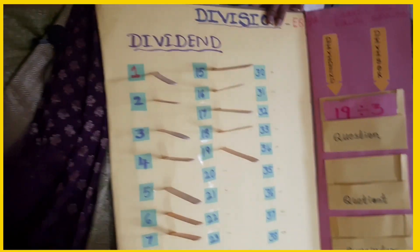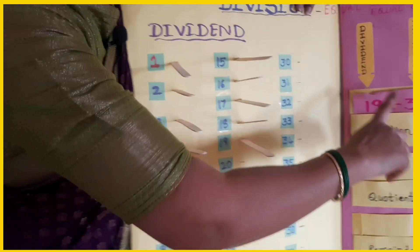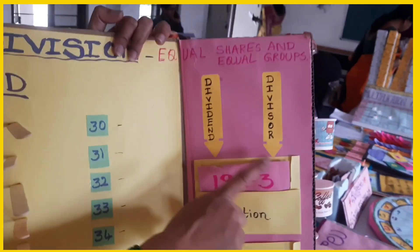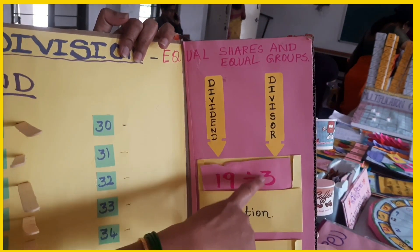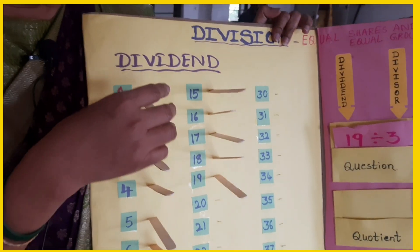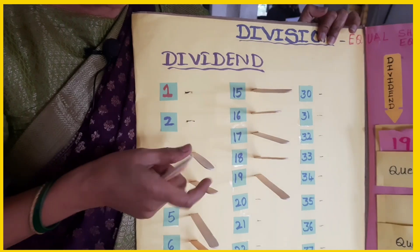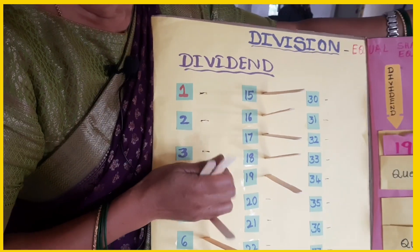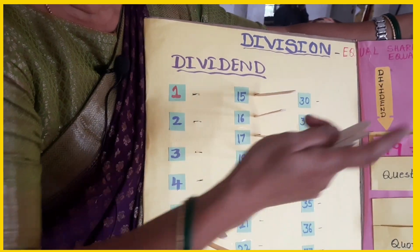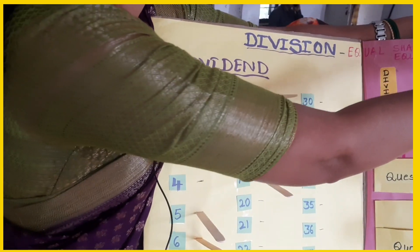The divisor is 3. We take 3 sticks and place them in the question box — the question column.